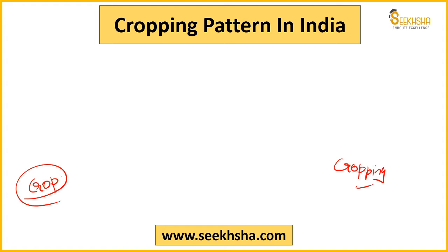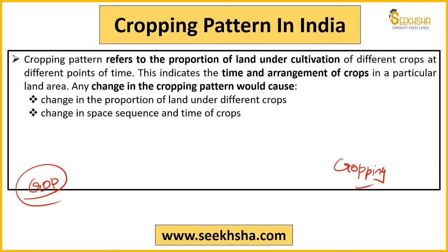Our focus is on cropping pattern. Cropping pattern is defined as the proportion of land under cultivation of different crops at different points of time. This indicates the time and arrangement of crops in a particular land area. If the cropping pattern changes, then the proportion of land under different crops will definitely change.